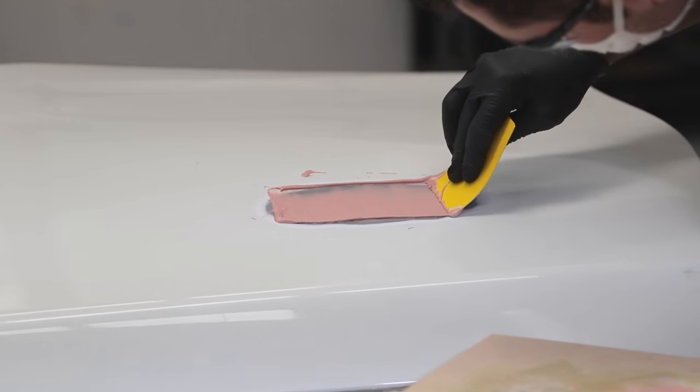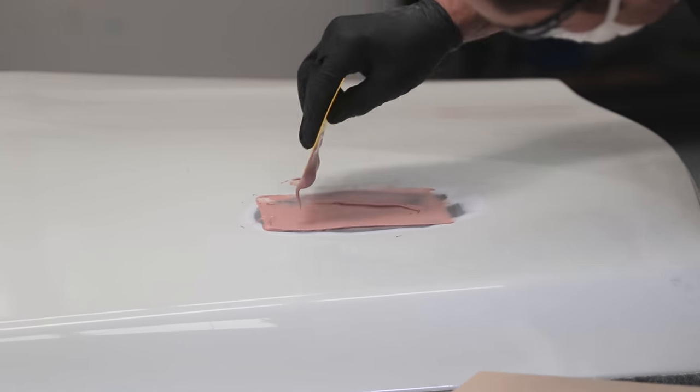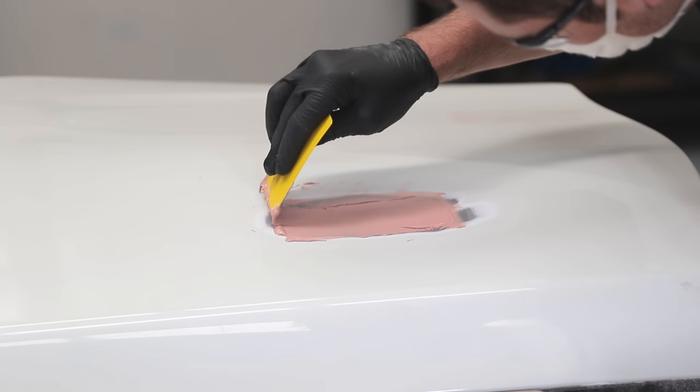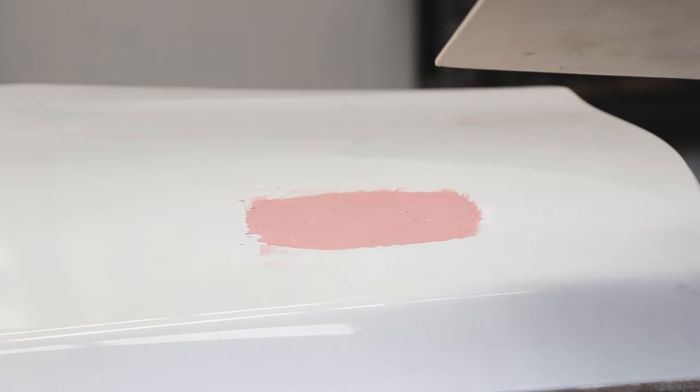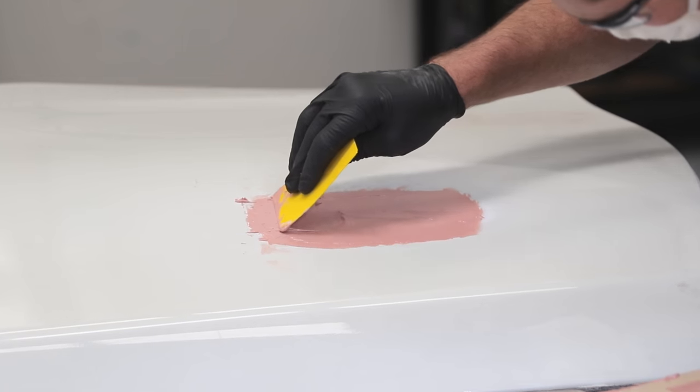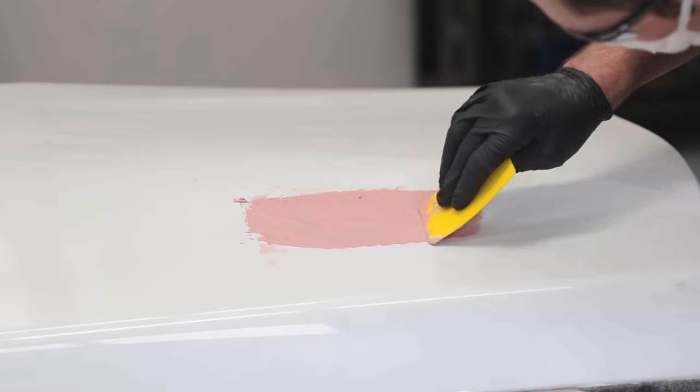Apply a thin layer of filler to the repair surface using firm pressure on the applicator to force the filler into all crevices and eliminate any air pockets. Gradually apply the remaining filler until it's slightly higher than the edge of the repair.